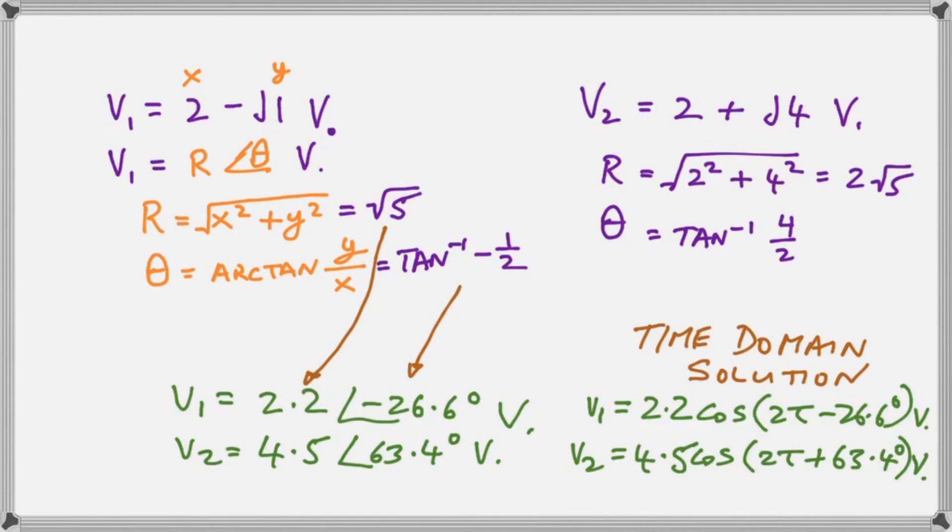And after we have found the polar form we see that we do have a phase angle on each of the voltages and the time domain solution is just inserting the amplitude and the phase angle for V1 and V2.